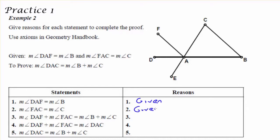Now the first two statements in my proof are both given, so I will write given as such: DAF is equal to B, and FAC is equal to C. That was given to me in the above section.